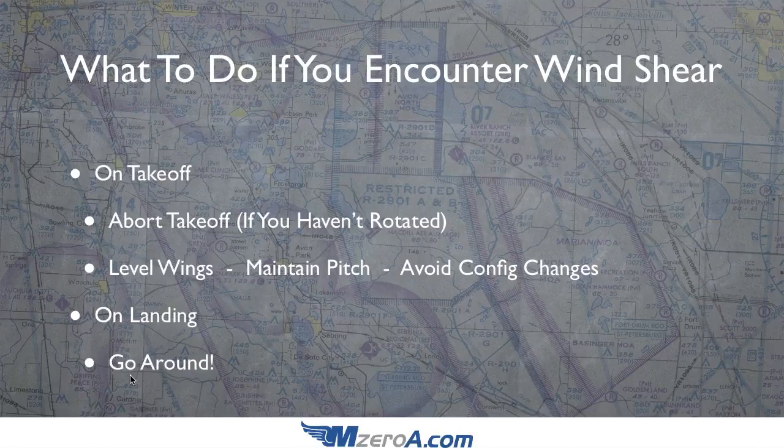The thing to understand about microbursts and those downdrafts is they are very concentrated. The reason they're so fast and so devastating to aircraft is because they are very concentrated bursts of air — that's why they're called microbursts. Very concentrated areas. You'll be in and out of it really before you know it. Typically they can last 15 to 20 seconds, depending on your speed as you're flying through them. And wind shear can be more than just microbursts — it can also be associated with frontal activity. Anytime you get that change in wind direction, you can be dealing with wind shear.